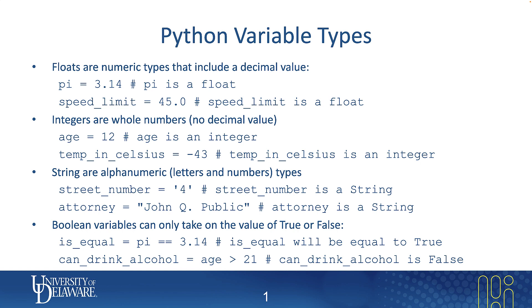Strings are alphanumeric — another way of thinking about it is a letter or number type. You can mix both letters and numbers with strings. For example, street_number is set to "4". Since we're putting quotes around the 4, it is not considered to be an integer — it is considered to be a string. So street_number will have a type of string.